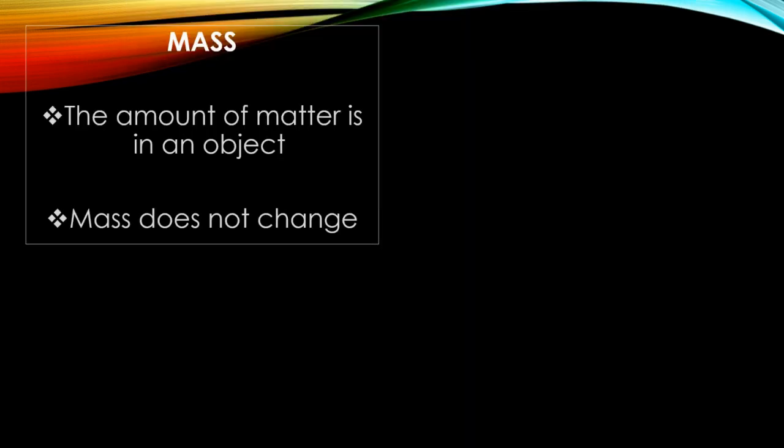This might be a good time to review the difference between mass and weight. Mass is the amount of matter in an object. Think of all the particles that make up your pencil. All of those particles constitute the pencil's mass. Mass does not change. If you take your pencil to the moon, it will have the same number of particles that it did on Earth.